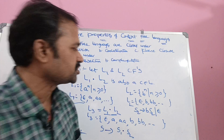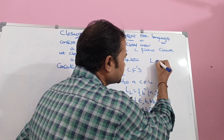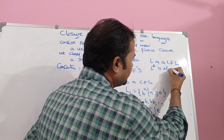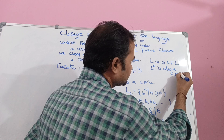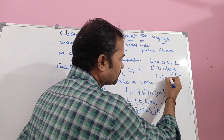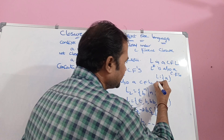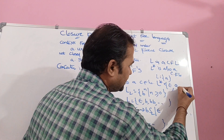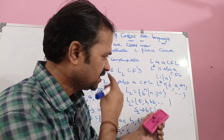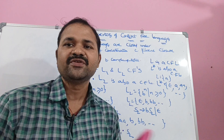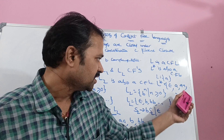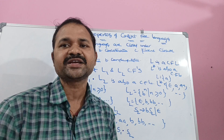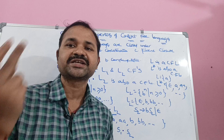The third property is Kleene closure. If L is a context-free language, then L* is also a context-free language. For example, let L = {A}. Then L* = {epsilon, A, AA, AAA, ...} — any number of A's, including 0 A's which gives epsilon. So we can say that if L is a context-free language, then L* is also a context-free language.